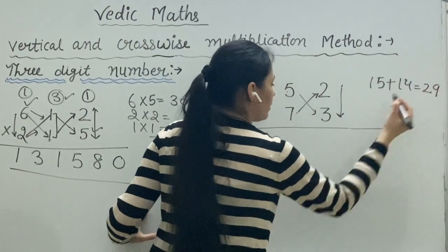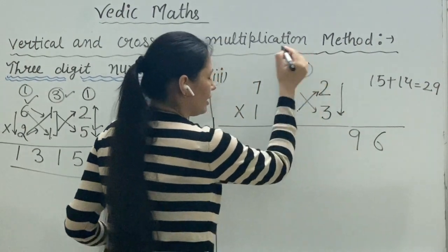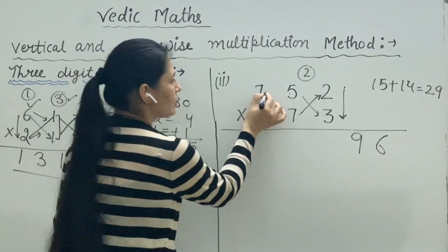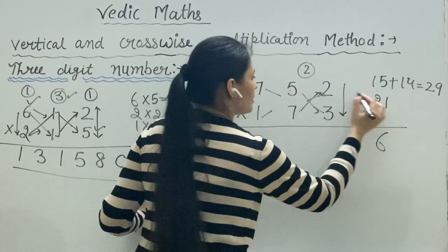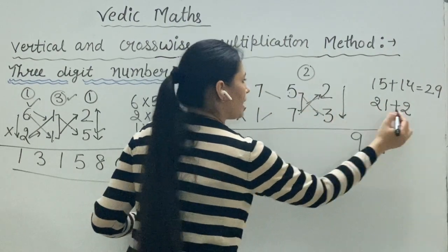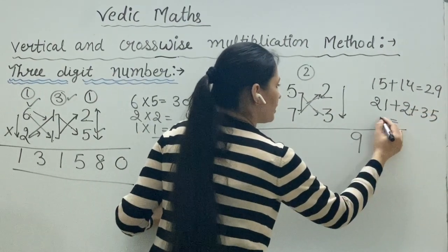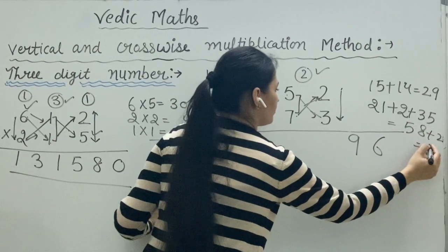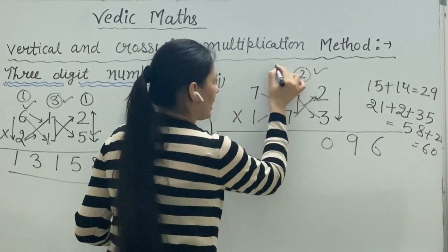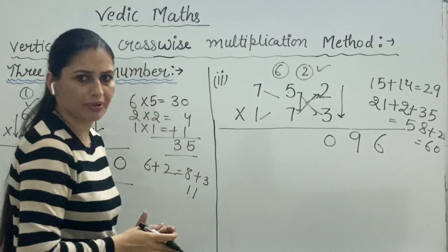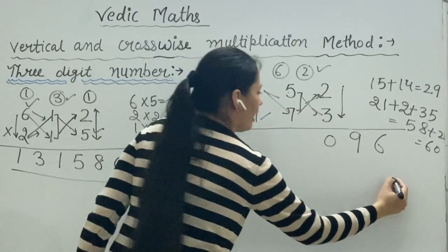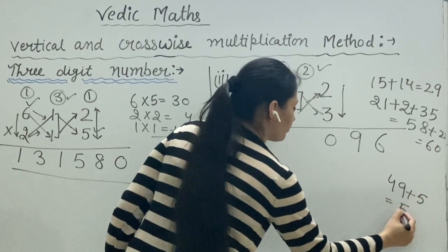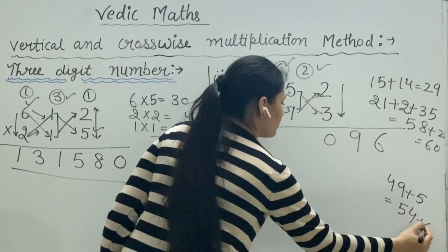Then we do crosswise multiplication taking all the digits: seven threes are twenty-one, one two is two, and seven fives are thirty-five. That totals fifty-eight, plus two carry is sixty. Put zero here and six as a carry. Next, vertically seven sevens are forty-nine, plus six carry is fifty-five.